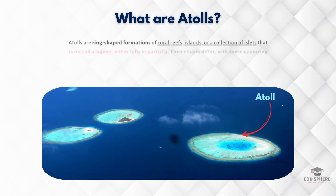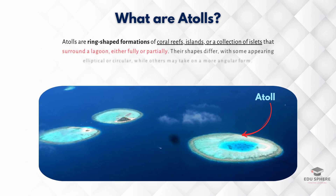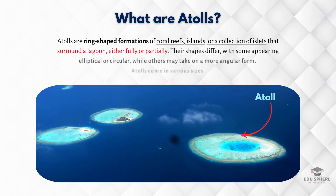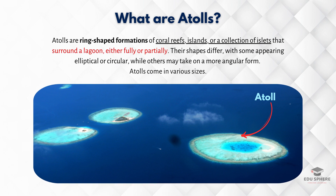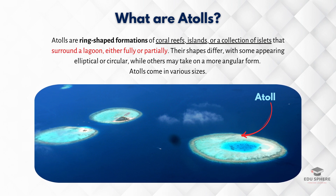Atolls are ring-shaped coral reefs, islands, or a series of islets that encircle a lagoon, either partially or completely. The shape of atolls varies, with some being elliptical or circular in shape, and others having an angular shape.